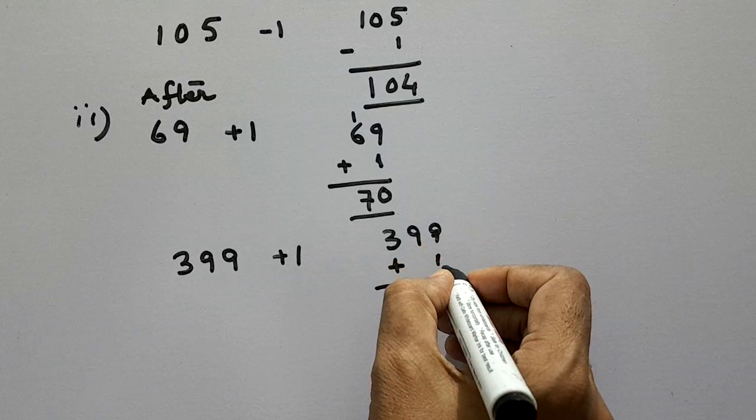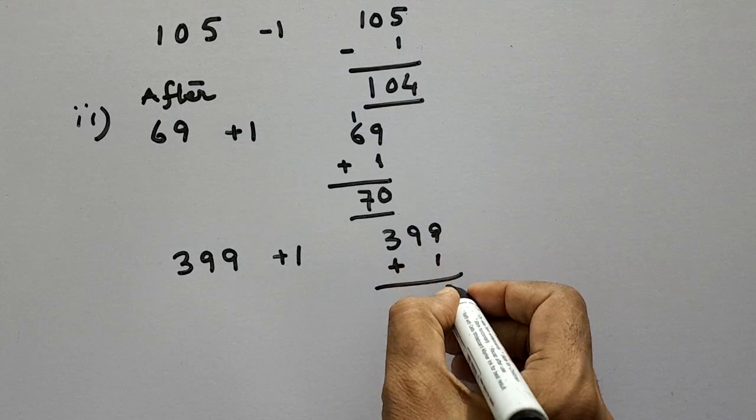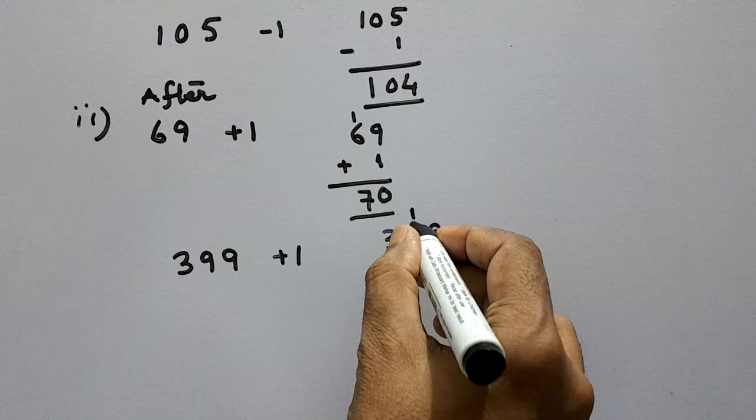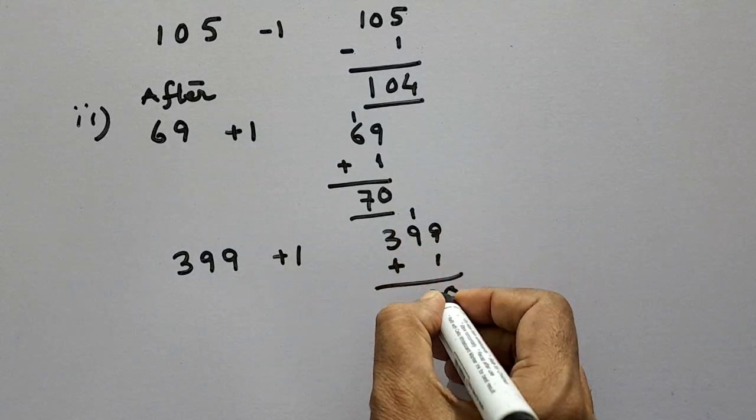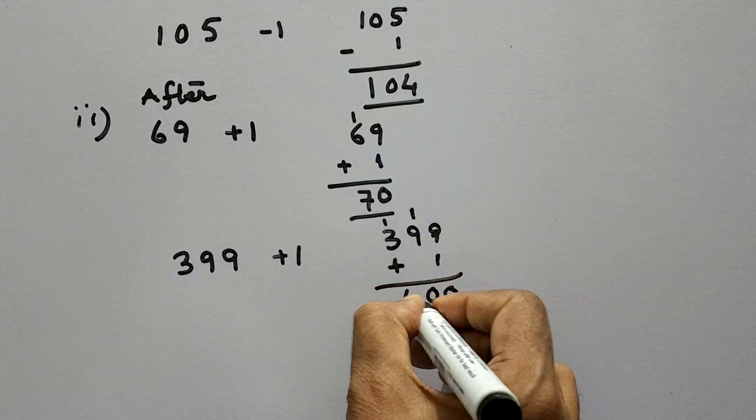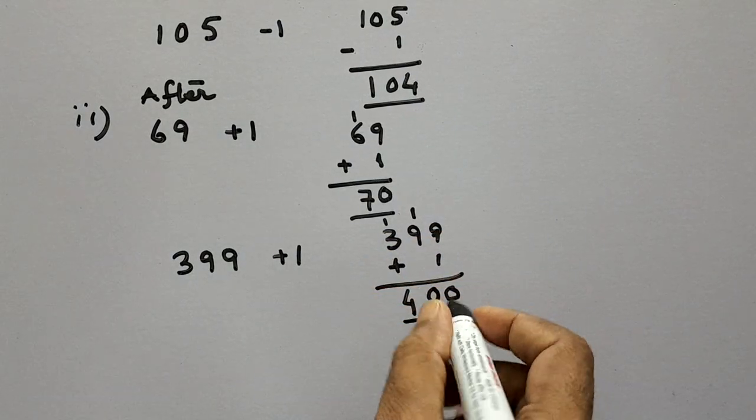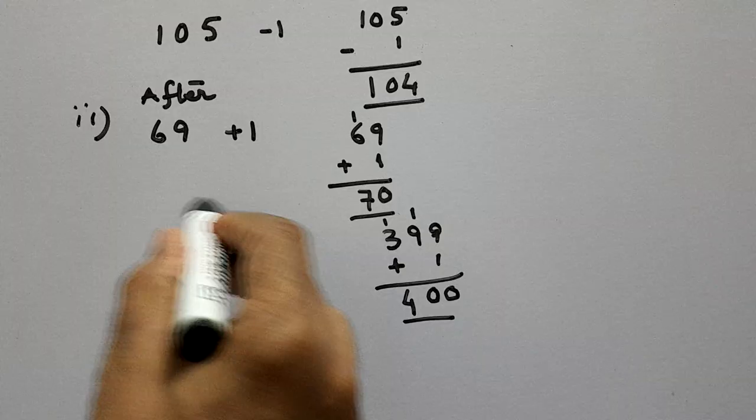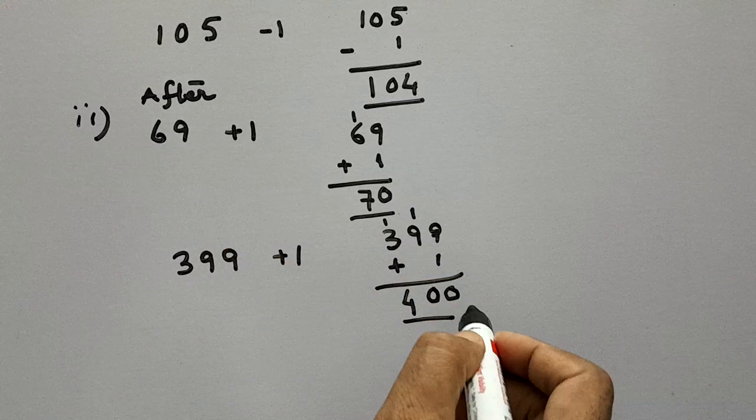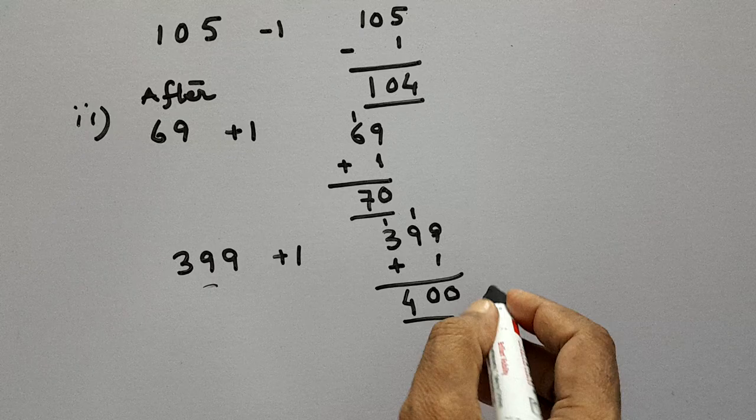So 9 plus 1 is 10 ones. So we will put 0 here, carry 1. Then 9 plus 1 is 10 tens. So we will put 0 here and carry 1. So 3 plus 1 is 4. So 400 is the successor of 399. Or in other words, 400 comes after 399.